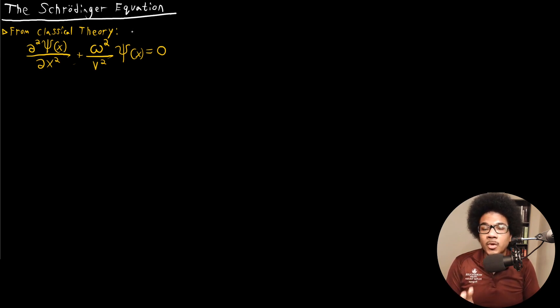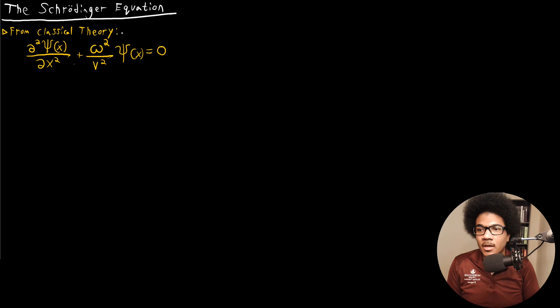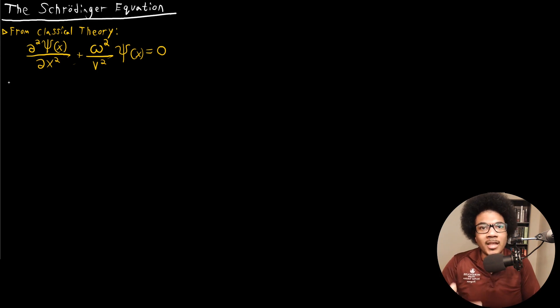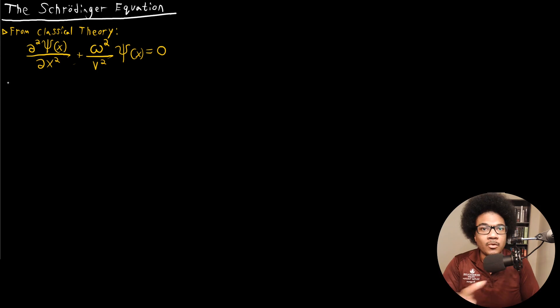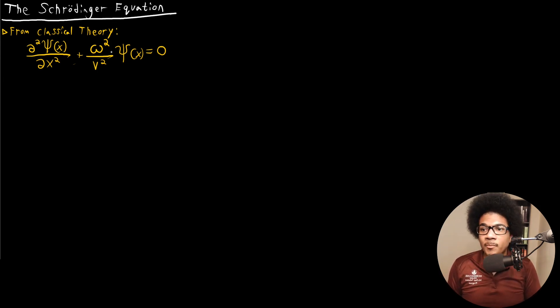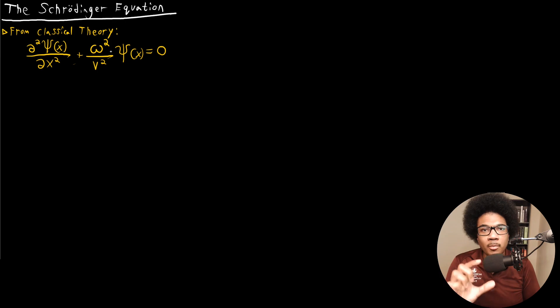What I want to do here is use this as a starting point to build up Schrödinger's equation and motivate the underpinning of Schrödinger's equation as a wave equation that includes the particle-wave duality. The first thing I want to do is re-express this equation so that we have the fundamental properties of the wave — the wavelength and the frequency.